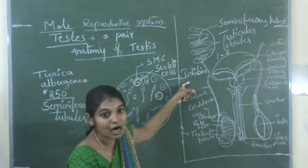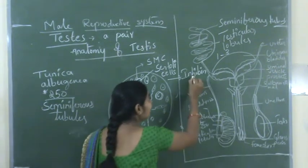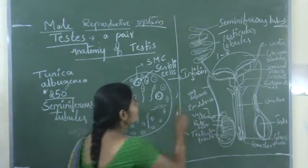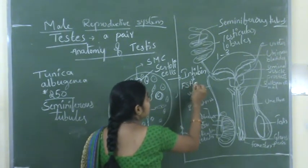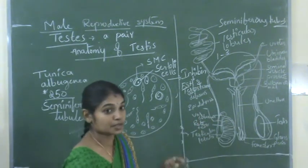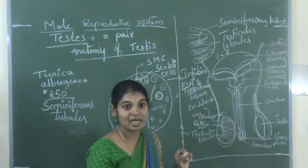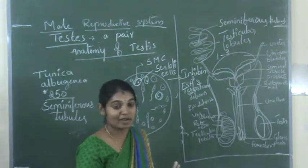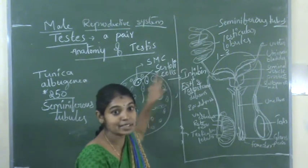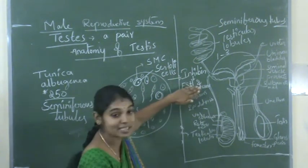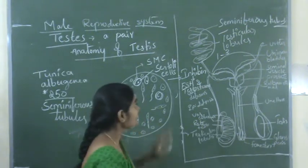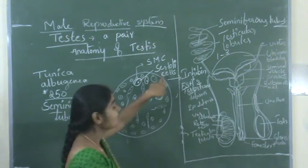The Sertoli cells also secrete a hormone known as inhibin. The function of Sertoli cells is: one, providing nutrition for the spermatogonial mother cells and sperms; and two, secretion of the hormone inhibin. Inhibin inhibits the secretions or functioning of FSH and testosterone. FSH and testosterone are the hormones required for spermatogenesis. When the spermatogenesis process is completed, inhibin is secreted by the Sertoli cells to inhibit FSH and testosterone.